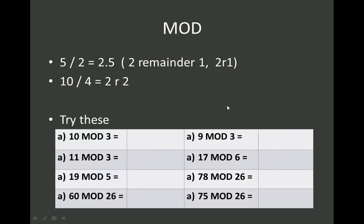Let's make sure you understand the mod operator. We all know that 5 divided by 2 is 2 and a half — at primary school you learned that was 2 remainder 1. For example, 10 divided by 4 is 2 remainder 2, because 2 times 4 is 8, therefore there are two differences between 10 and 8. If you don't understand the mod operator, you need to have a quick go at these exercises. If you let the video run, you'll see the answers on the next slide, so pause it now and have a go.